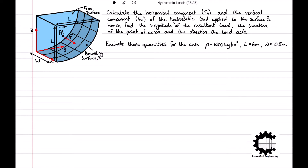Finally, evaluate these quantities for the case where rho equals 1000 kilograms per meter cubed, L equals 6 meters, and W equals 10.5 meters. Before we work through the solution, you're welcome to pause the video here and attempt the question for yourself. Now that you've had a chance to answer this question, let's go through how to do it.